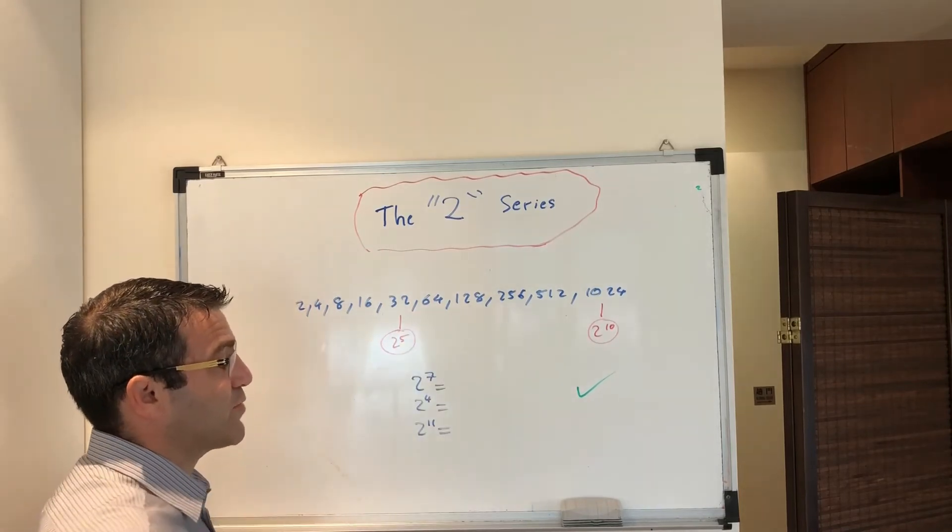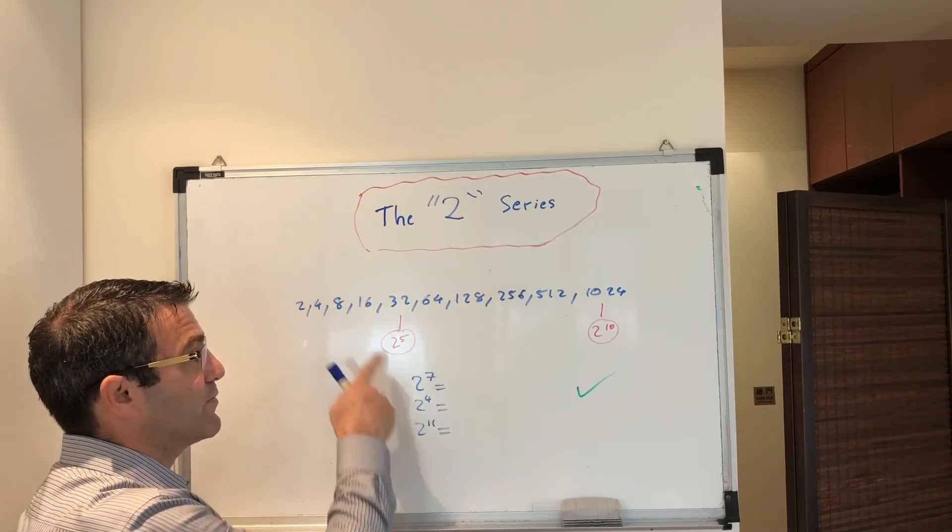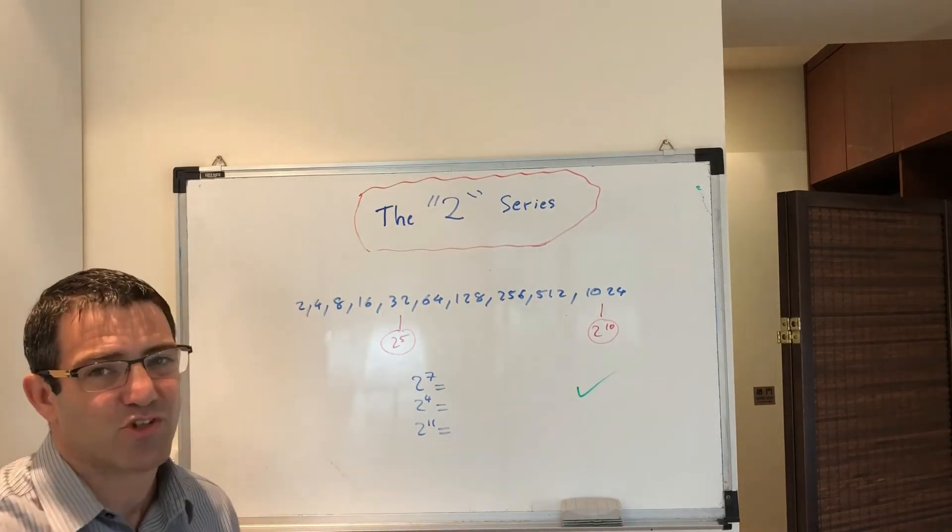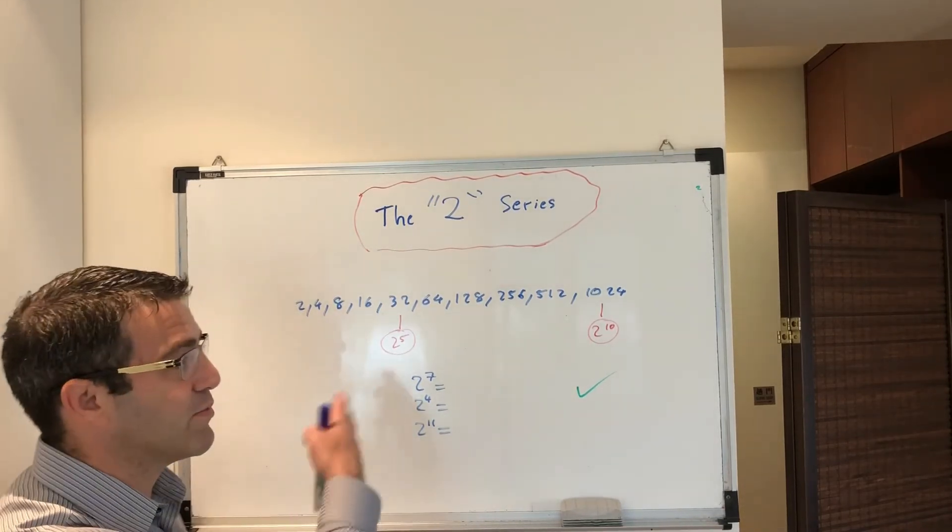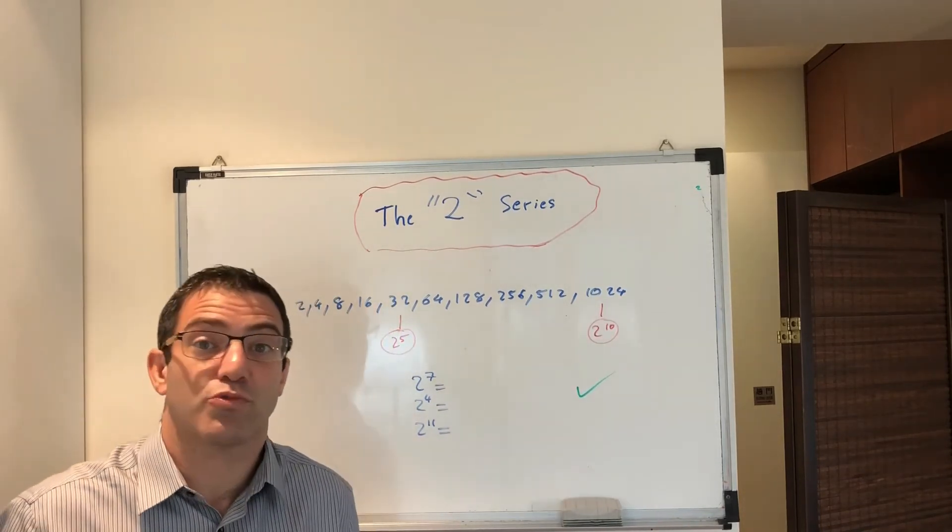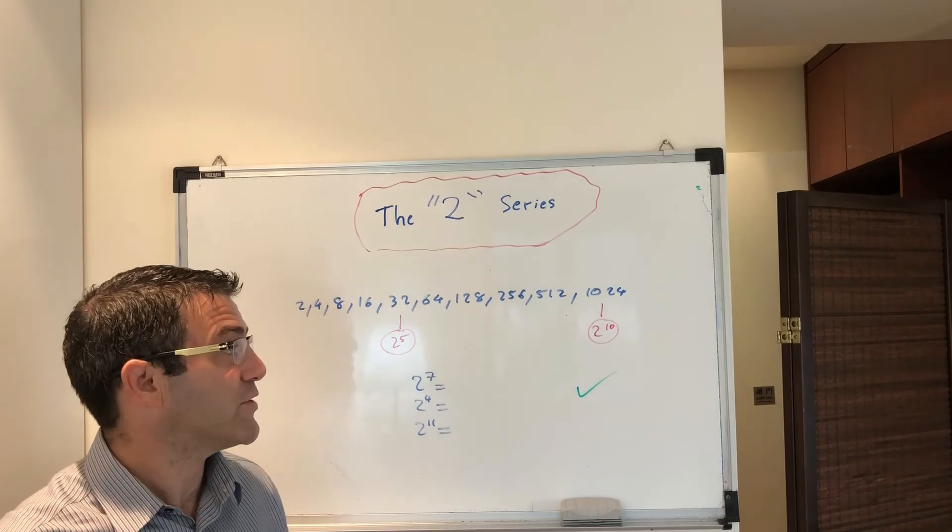So 2 to the power of 7? 128. 2 to the power of 4? 16. 2 to the power of 11? Oh, that's a trick question because it's not on the board. Well, it's 1024 times 2, so 2048, right?